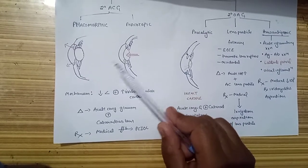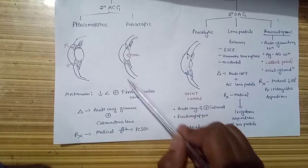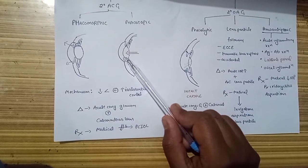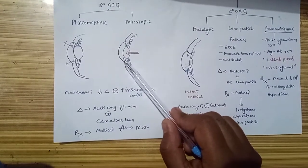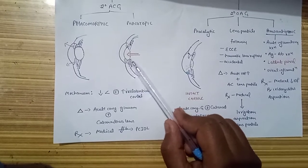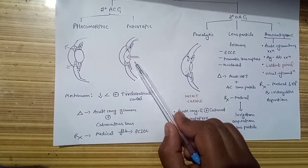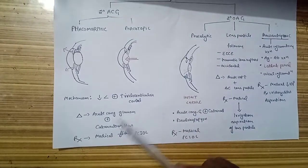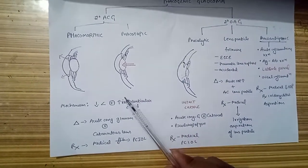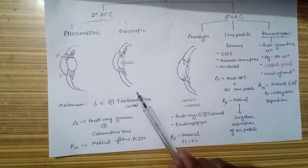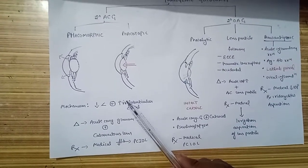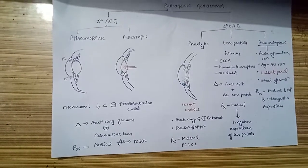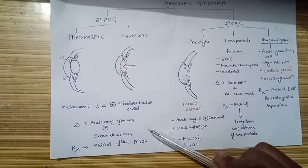The other mechanism is that iridolenticular contact occurs, which results further in blockade of drainage of aqueous from posterior chamber to anterior chamber. Diagnosis is very simple for phacomorphic glaucoma because they present as acute congestive glaucoma plus a cataractous lens, so diagnosis becomes easy.